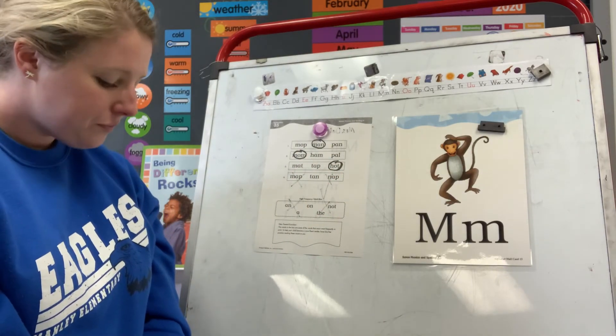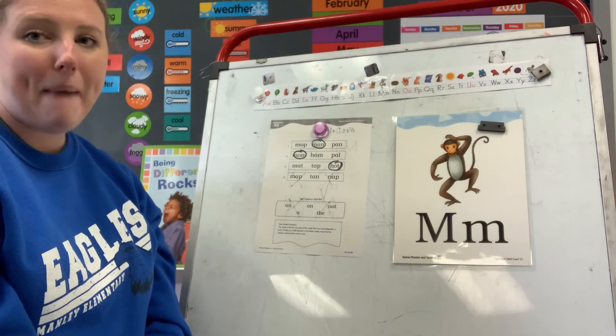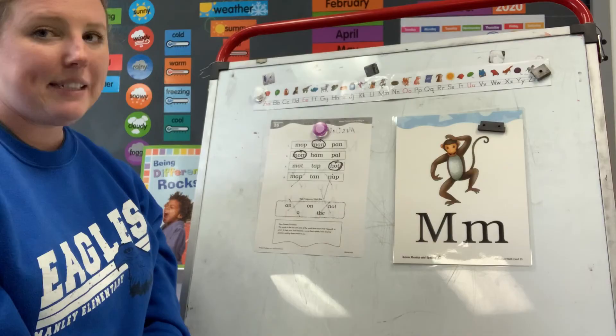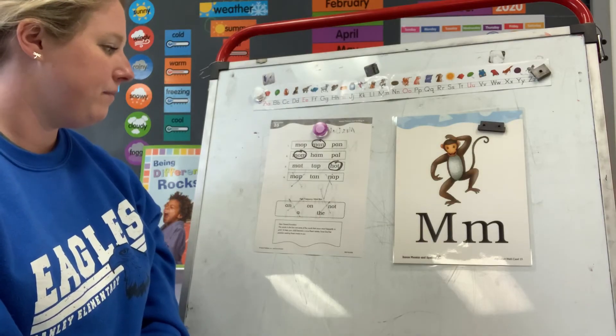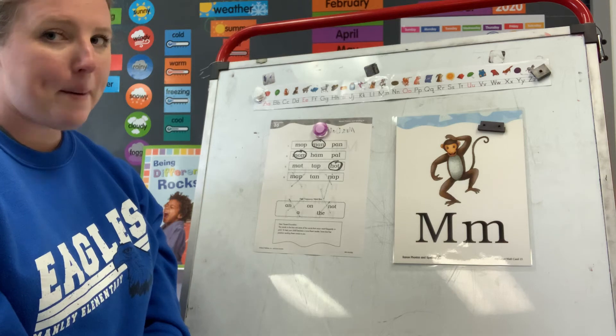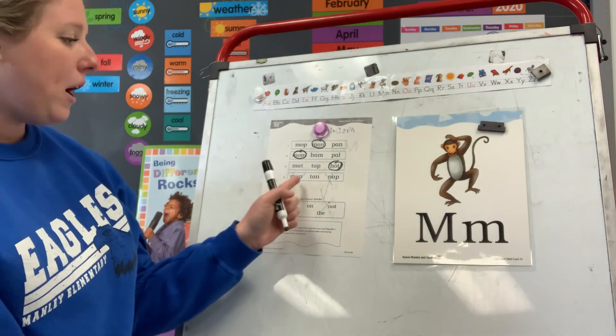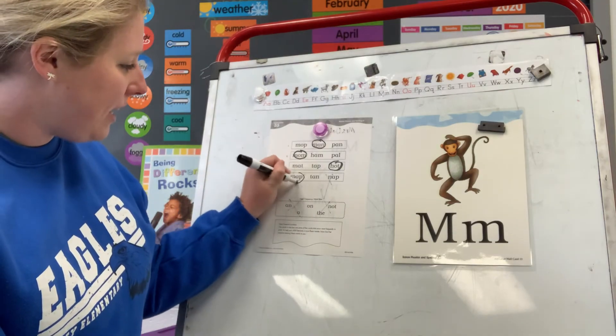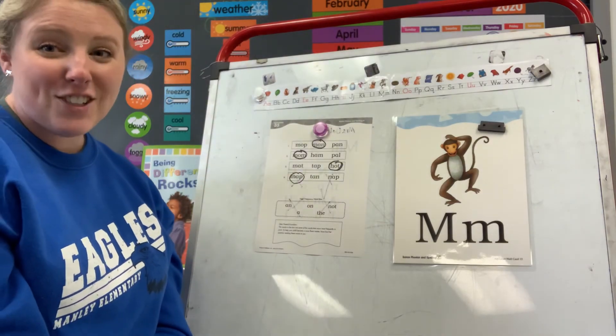All right, look at number four. Circle the word map. Which one of these words is map? M-a-p. Is it the first word, the second word, or the third word? The first word. Go ahead and circle. Good job, friends. Pat yourselves on the back.